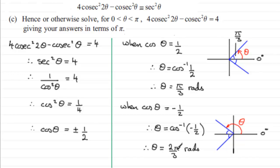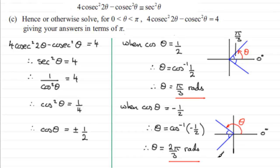So θ equals 2π/3 radians — two thirds of π. This makes sense because π/3 represents 60 degrees, so twice that is 120 degrees. There are our two solutions: θ = π/3 and θ = 2π/3. I hope that gives you an idea of how to approach this type of problem.